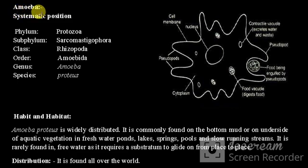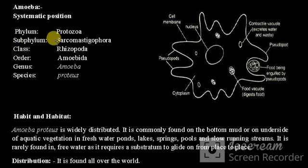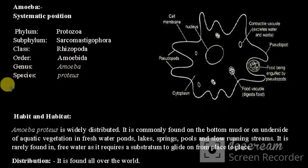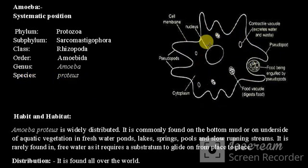Amoeba systematic position: Phylum Protozoa, Subphylum Sarcomastigophora, Class Rhizopoda, Order Amoebida, Genus Amoeba, Species proteus. This is the diagram of Amoeba.